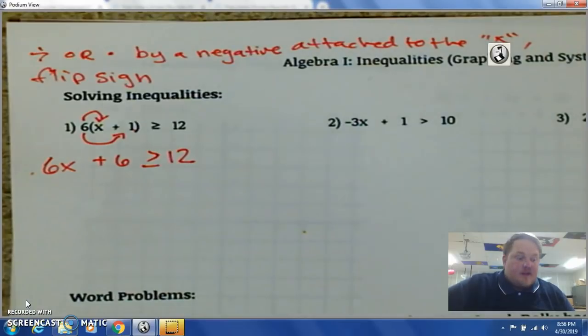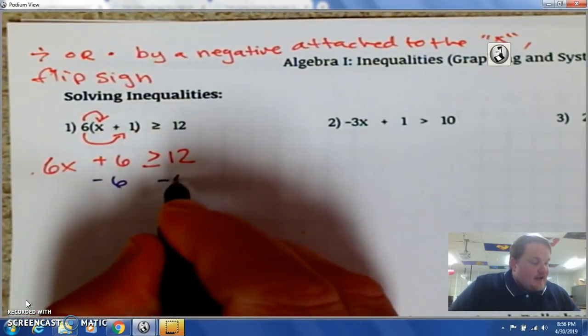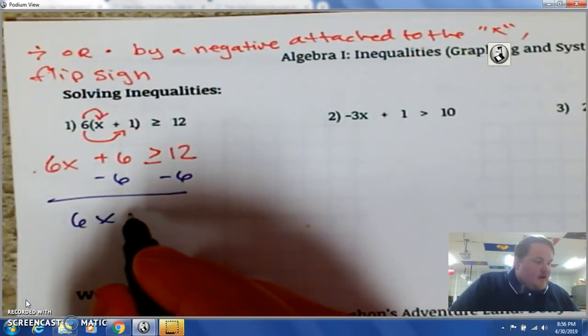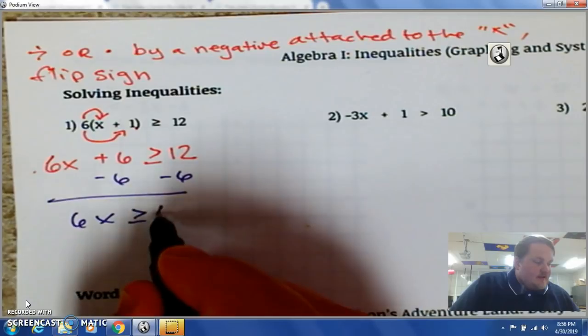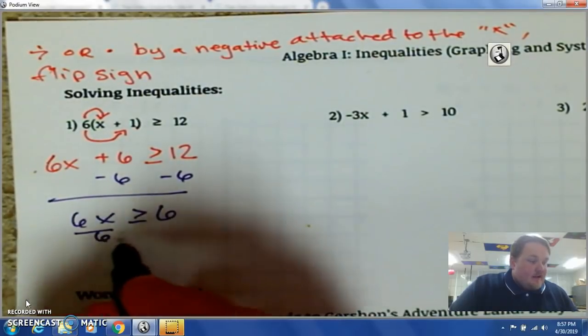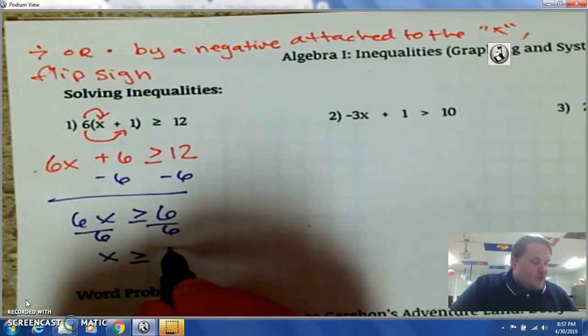I solve this as if I'm solving an equation. I subtract 6 from both sides. I get 6x is greater than or equal to 6. And in this situation, I divide by 6. It's not negative. So, I keep the sign. x is greater than or equal to 1.